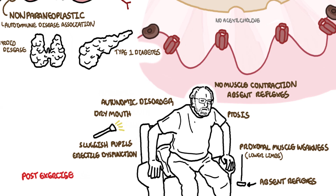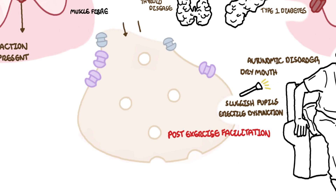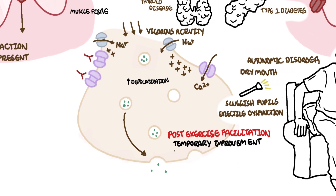One of the hallmarks of Lambert-Eaton Myasthenic Syndrome is post-exercise facilitation. This is essentially when one performs repetitive activities or repetitive movements — instead of fatigability, it forces depolarization and the release of acetylcholine into the synaptic cleft. This post-exercise facilitation causes temporary improvement, which is the hallmark of Lambert-Eaton Myasthenic Syndrome.